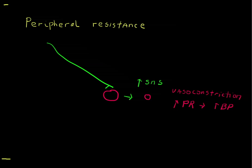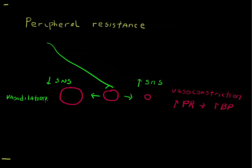A decrease in the sympathetic nervous system signal to the blood vessel leads to the opposite: the blood vessel gets larger. These vessels are small arterioles for the most part, and this is called vasodilation. Vasodilation decreases the peripheral resistance, which leads to a decrease in blood pressure.